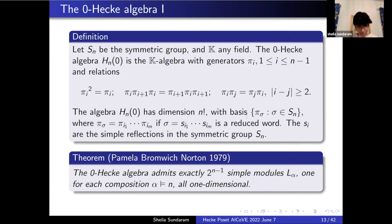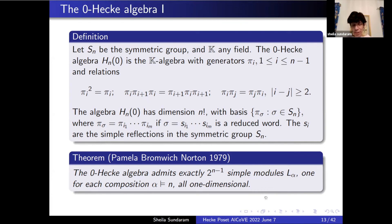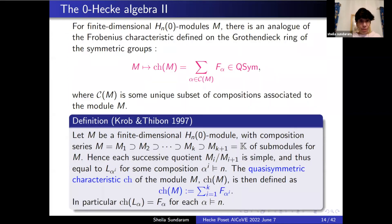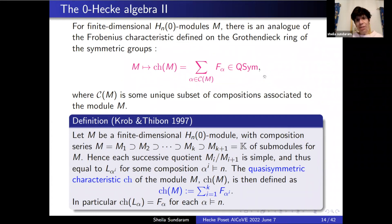Importantly, there's a very simple description of the simple modules due to Pamela Norton. She showed there are exactly 2^{n-1} simple modules L_{alpha}, one for each composition alpha, and they're all one-dimensional. To every finite-dimensional zero Hecke module you can associate a quasi-symmetric function that comes up as a sum of fundamental quasi-symmetric functions indexed by compositions uniquely determined by your module.